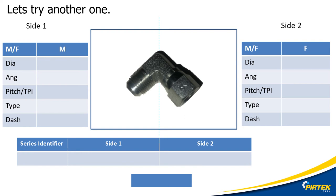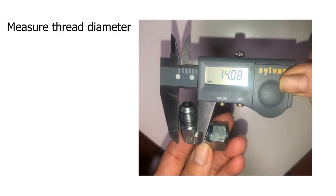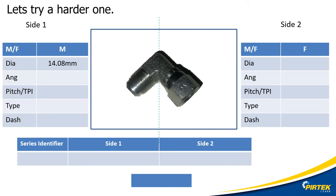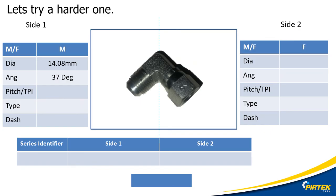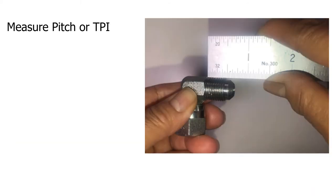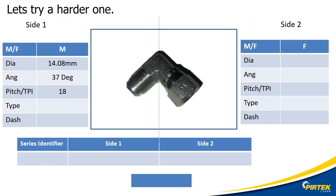Let's try a different one — this time a 90 degree adapter. Side one is male and side two is female. I'll measure the diameter of the thread on side one using vernier calipers, which reads 14.08 millimetres for the outside diameter, keeping in mind a 0.4 mm tolerance in each direction. I then measure the seat angle or cone angle — these can be difficult to measure; you might want to bend a bit of wire around the angle and measure it with a protractor. We have another 37 degree cone angle. Using a rule, I identify the pitch as 18 threads per inch.